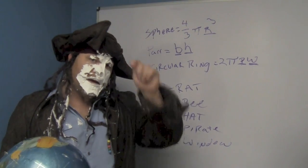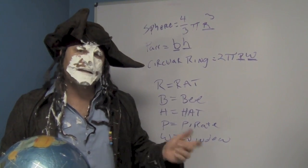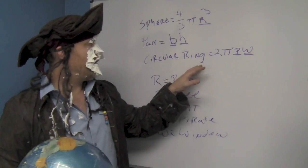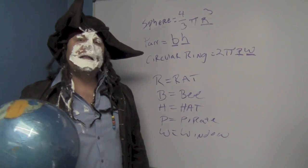Sphere is 4/3 pi R cubed. Parallelogram, the area formula is B times H. Base is BH—bumblebee and a hat is what we used. And then a circular ring, 2 pi PW. It's as simple as that.